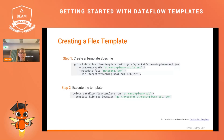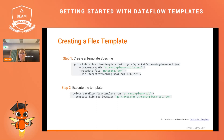The build and execute part of a flex template would look like the following: you would use the gcloud command line tool, where you use the build command to create a template spec file, which sits in a Cloud Storage bucket. And whenever you want to run the pipeline, you refer to that template spec file and are then able to run the pipeline.